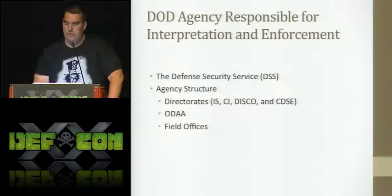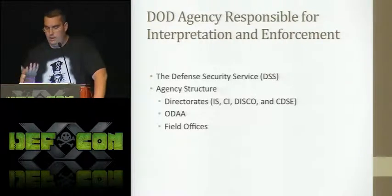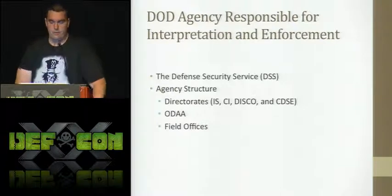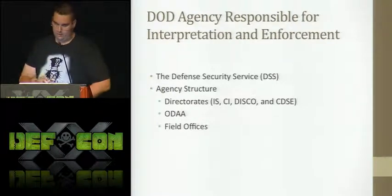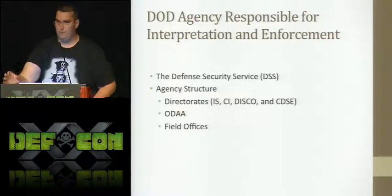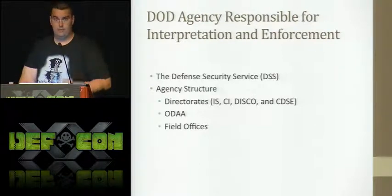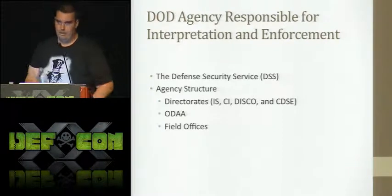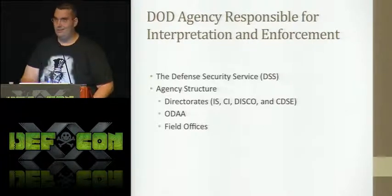Starting with the structure of the agency — there are four main directorates: IS, which is industrial security; CI, which is counterintelligence; DISCO; and CDSE. If you have worked in the classified world and you have a security clearance but you're not in the government, you've most likely gotten your security clearance through DISCO. That's what most people know about DSS — they did my security clearance, they did my background check. The funny thing is it's only a small percentage of what they do.